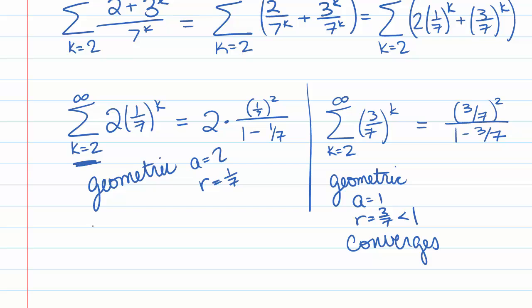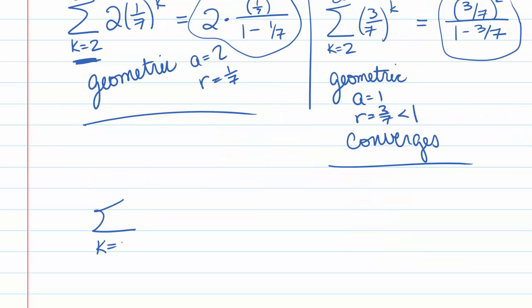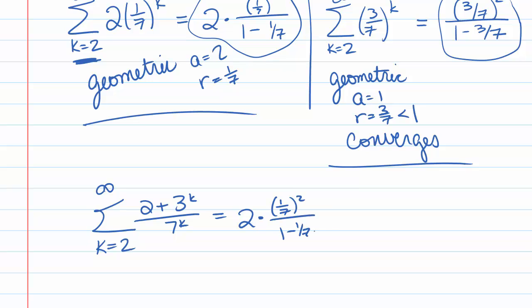Since both of these series converge, we can find the sum of our original series just by adding the two answers. So the sum k goes from 2 to infinity of 2 plus 3 to the k over 7 to the k equals 2 times (1/7) squared over 1 minus 1/7, plus (3/7) squared over 1 minus 3/7. And it also converges.